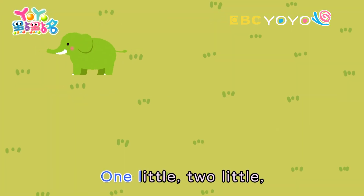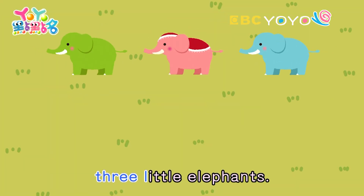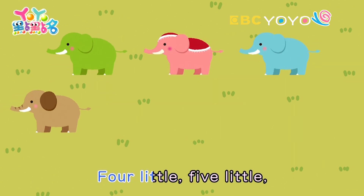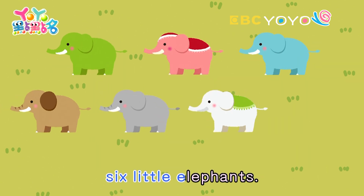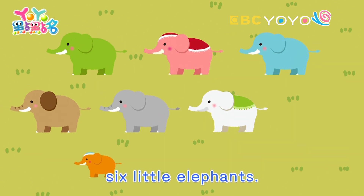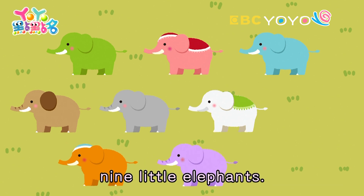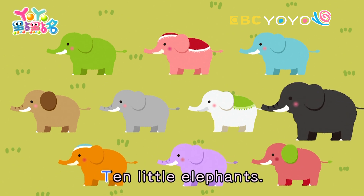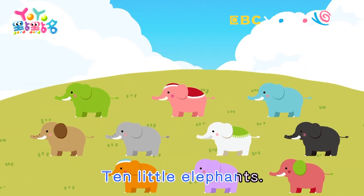One little, two little, three little elephants. Four little, five little, six little elephants. Seven little, eight little, nine little elephants. Ten little elephants.